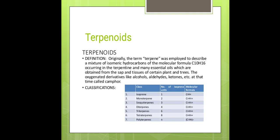The molecular formula of isoprene is C5H8. For monoterpene it is C10H16, sesquiterpene is C15H24, diterpene is C20H32, triterpene is C30H45, tetraterpene is C40H64, and polyterpene has the general formula C5H8N. This covers the classification of terpenoids based on isoprene units.